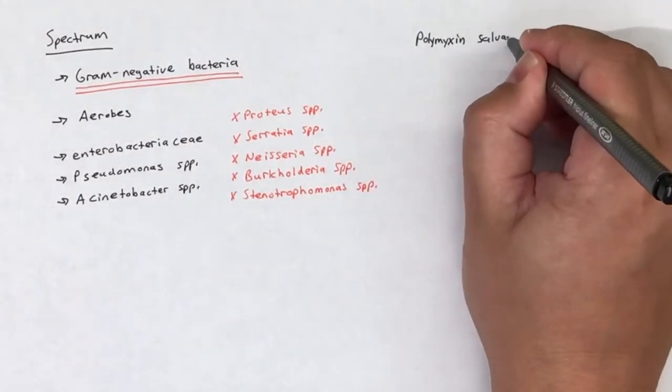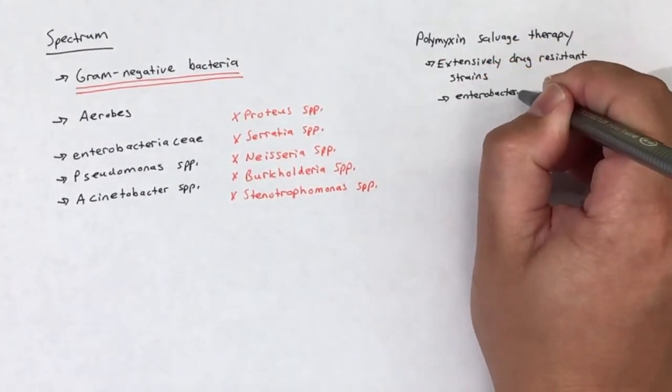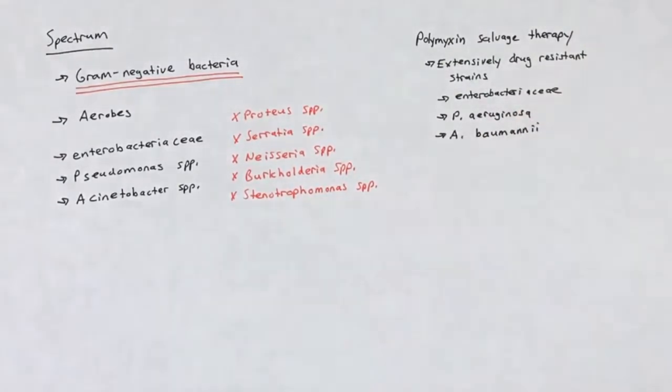The relatively recent emergence of extensively antibiotic-resistant strains, including Enterobacteriaceae, Pseudomonas aeruginosa, and Acinetobacter baumannii, has renewed interest in systemic parenteral salvage polymyxin therapy.